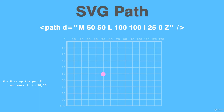Then we have 'L', which means let's start drawing. It also takes two numbers for x and y. So 'L 100 100' means: draw a line to x=100, y=100, starting from where we placed the pen at 'M 50 50'. We could add many more 'L' commands to keep drawing lines.